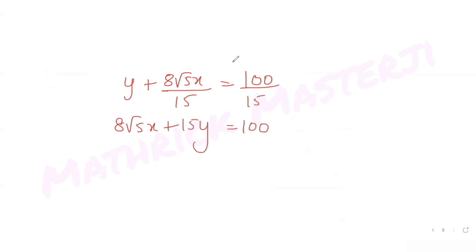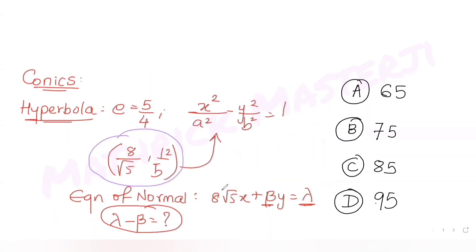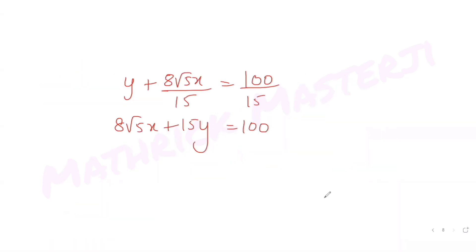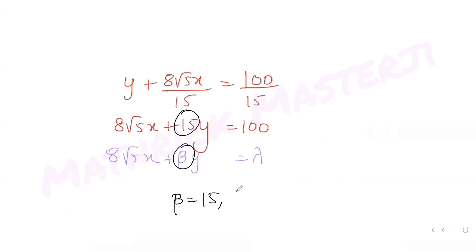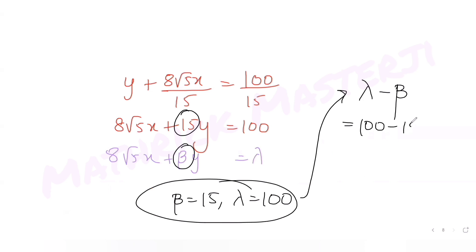The equation of the normal is 8√5·x + 15y = 100. Comparing with the given form 8√5·x + βy = λ, we get β = 15 and λ = 100. Therefore, λ - β = 100 - 15 = 85.